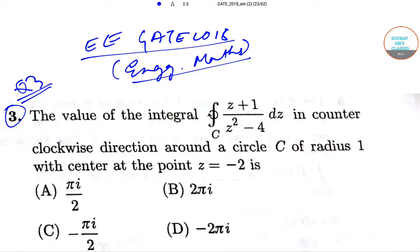In question number three we need to find out the value of the integral z plus 1 upon z square minus 4 dz in counterclockwise direction around a circle c of radius 1 with center at the point z equal to minus 2.